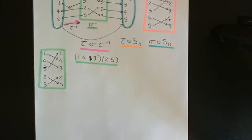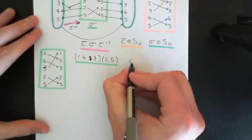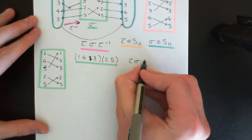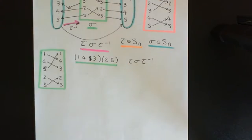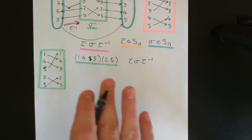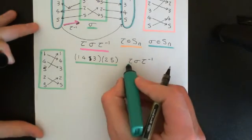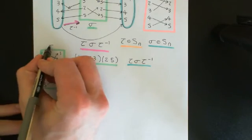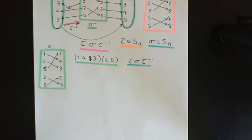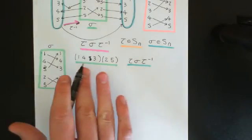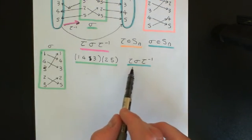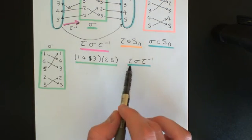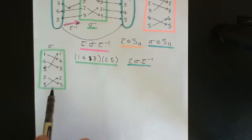Now, what I want to ask is: can I instantly write down the cycle decomposition of τστ⁻¹, i.e. σ conjugated by τ? The answer is yes. There's a nice expression for the cycle decomposition of this new element underlined in turquoise. Remember the interpretation: this means use τ to relabel the domain and codomain and tell me what the new set permutation is once we've done so.